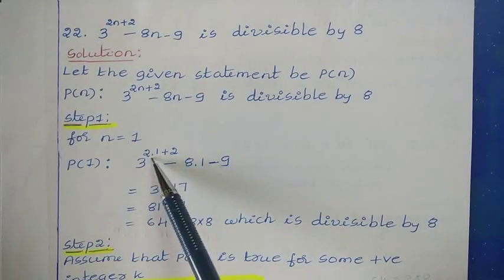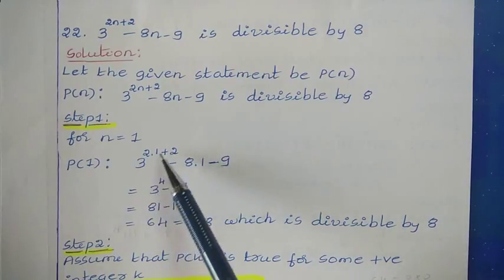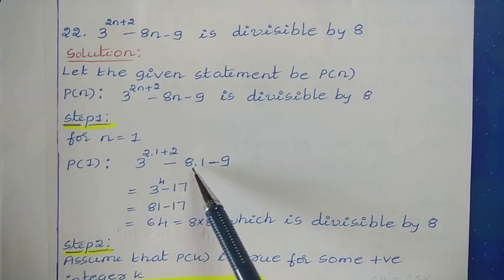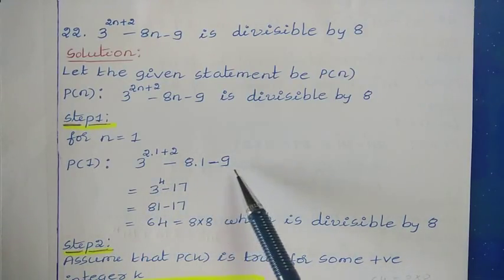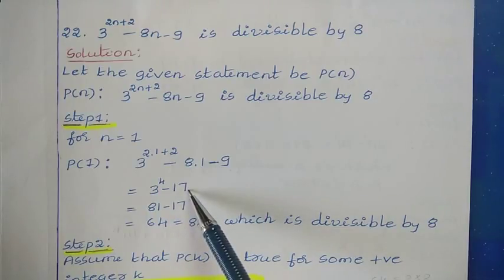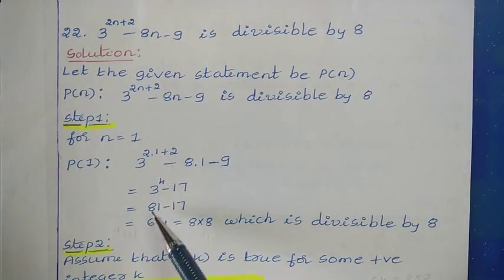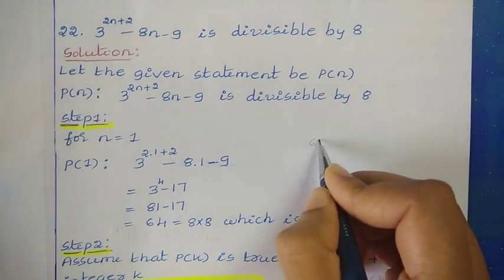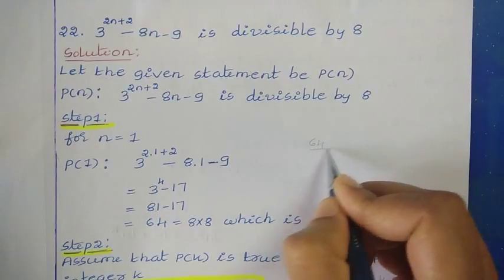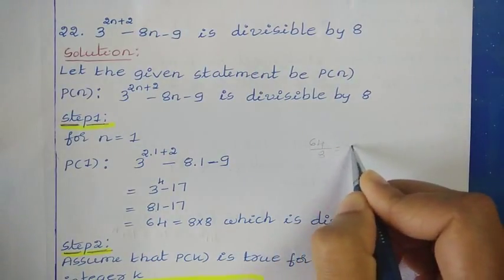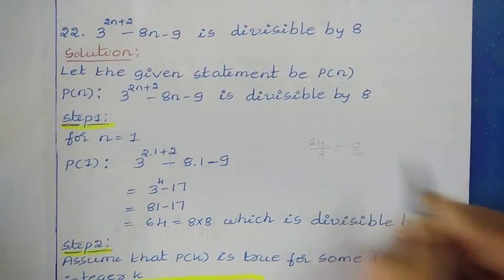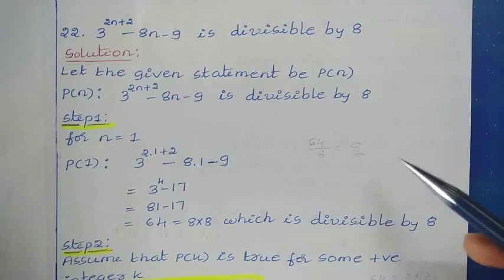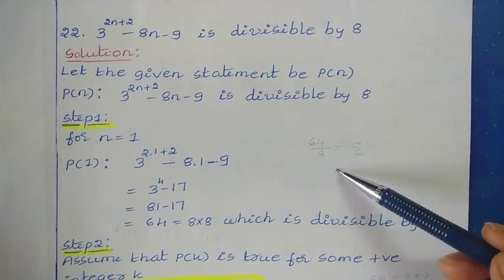So 2 plus 2 which is 4, giving 3 to the power 4 minus 8 minus 9, that is minus 17. 3 to the power 4 is 81, and 81 minus 17 is 64. 64 is divisible by 8 — 64 divided by 8 gives quotient 8 and remainder 0, so it is successfully divisible.